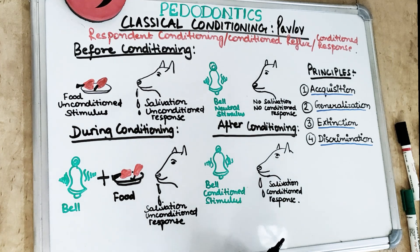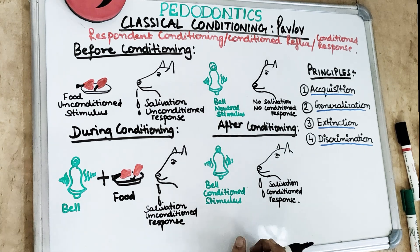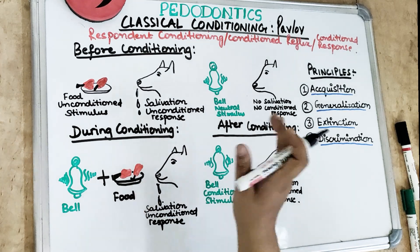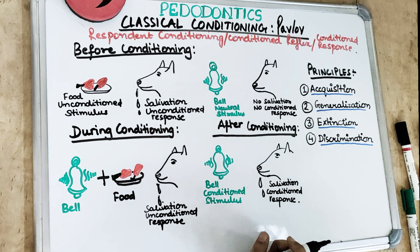The good thing about classical conditioning theory is it is simple to understand, unlike the psychosexual theory of Sigmund Freud, the psychosocial theory by Eric Erikson, and Piaget's cognitive theory, which we have already covered. I will give you a link in the description below if you haven't watched those videos. So that's about classical conditioning theory by Pavlov — I hope you enjoyed it and understood it. If you have any questions, you can leave them in the comments below.